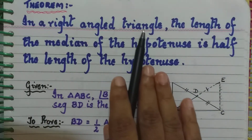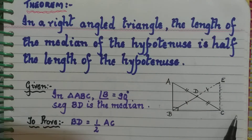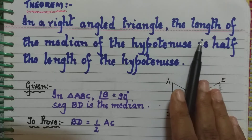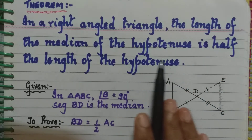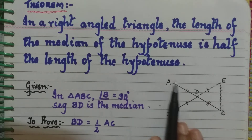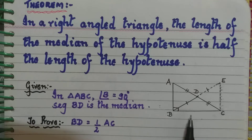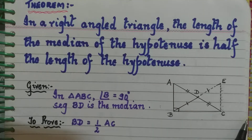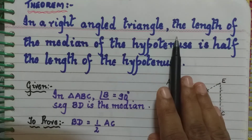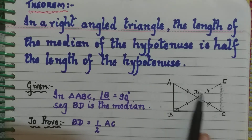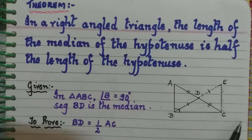First of all, what do we have? There is a right angled triangle ABC, right angled at B. The length of the median of the hypotenuse — a median is a line drawn from the opposite vertex that cuts the hypotenuse into two equal parts. So the median of the hypotenuse here is BD, which divides AC into two equal parts. The length of BD is half the length of the hypotenuse AC.